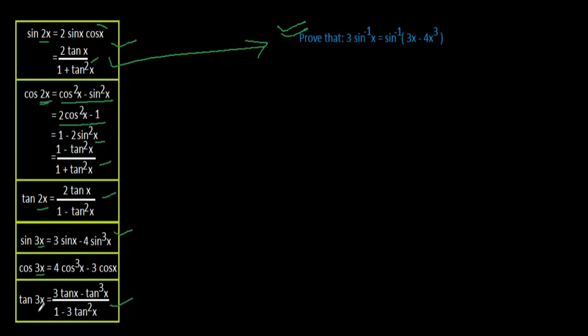Coming to this question: prove that 3 sin⁻¹(x) = sin⁻¹(3x - 4x³). We don't have anything to start with on the left-hand side, so I'm going with the right-hand side. So RHS: